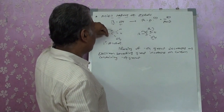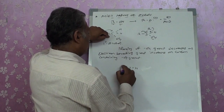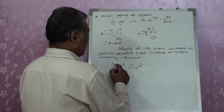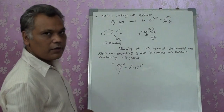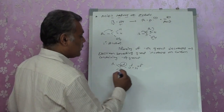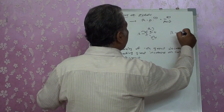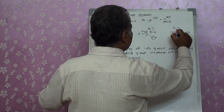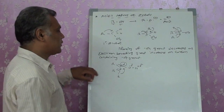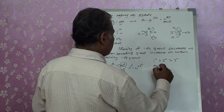If we have two R groups both donating electrons, the polarity of the OH group decreases. The carbon attached to OH becomes partially positive and the R group donates an electron pair, making it comparatively neutral. If we have three R groups all donating, polarity is least.